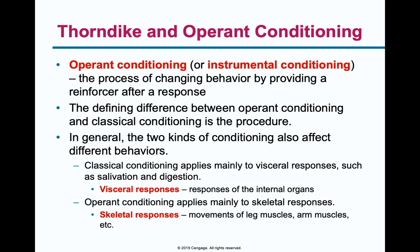So operant conditioning starts to go a little bit further. This is the idea of introducing reinforcements, introducing rewards. Whereas classical conditioning was all stimulus-response, operant conditioning takes in things like reinforcing behavior — both positive and negative — and punishment, to start to associate why we behave the way we do. The difference between operant conditioning and classical conditioning is the procedure. Classical conditioning applies mainly to visceral responses such as salivation and digestion — things that are related to your body. And operant conditioning applies more to skeletal muscles — movements of leg muscles, arm muscles, etc.